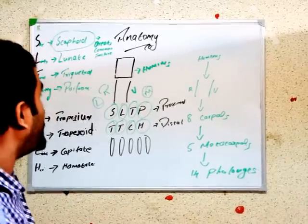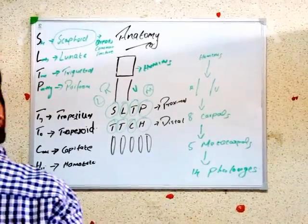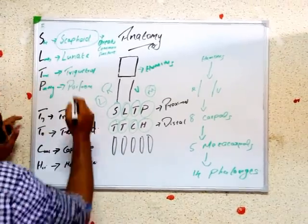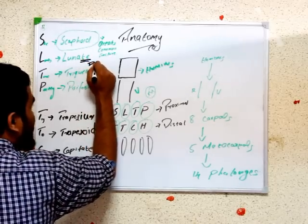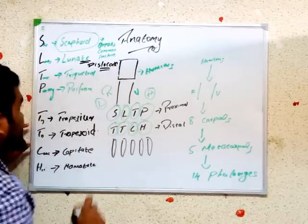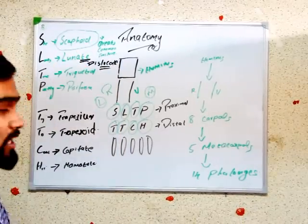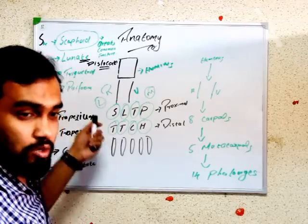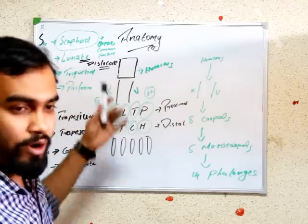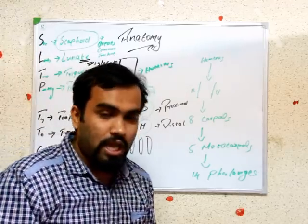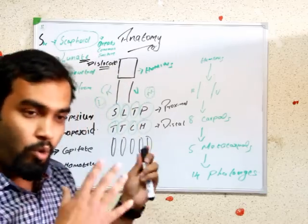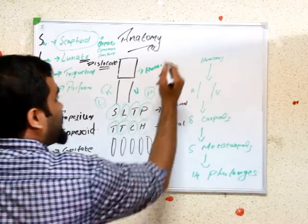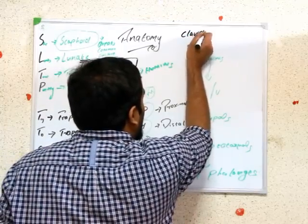The other question: which carpal bone most commonly dislocates? That is the lunate. So remember: scaphoid is the most common carpal bone to fracture, and lunate is the most common carpal bone to dislocate. Which bone among carpal bones undergoes fracture most commonly? Scaphoid.